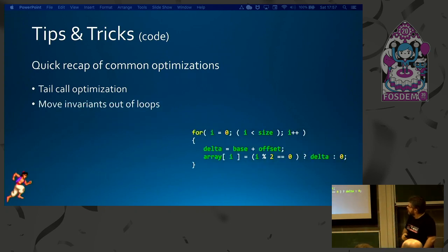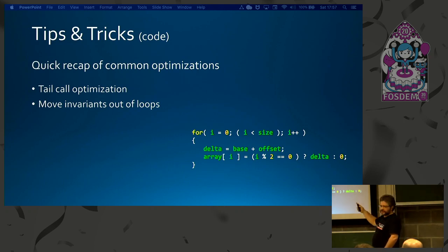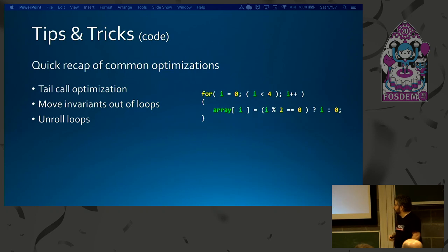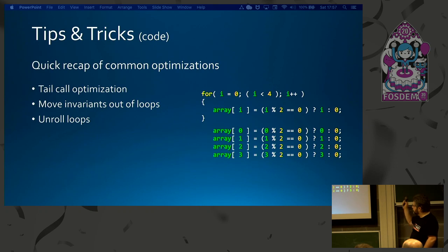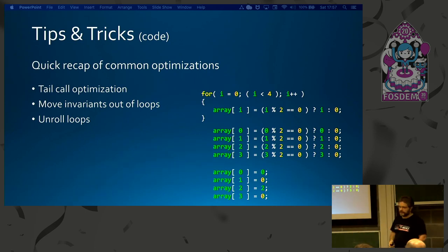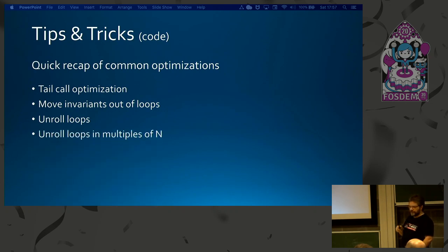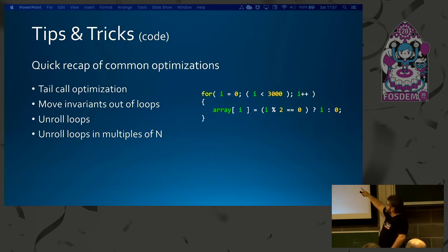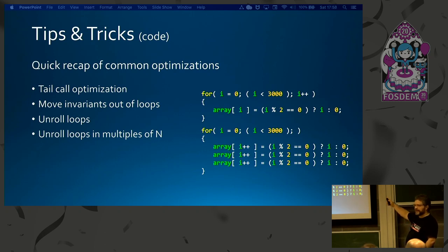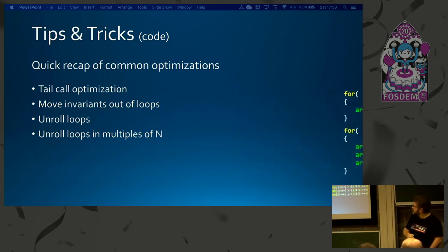Next: move invariants out of the loop. If 'delta = base + offset' doesn't change anywhere in the loop, move it outside — standard optimization knowledge. We can also unroll loops: substitute the for-loop with a direct sequence of instructions and optimize because we know all the results of those instructions. And enroll in multiples of n — if the limit is a large number like 3000, we can't unroll everything, so we unroll in blocks of n to reduce the overhead of loop control.